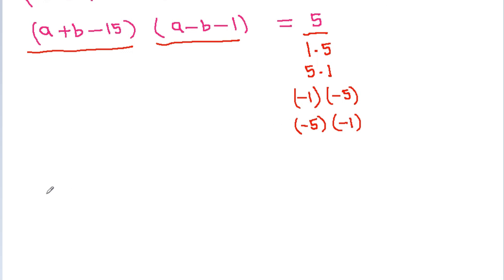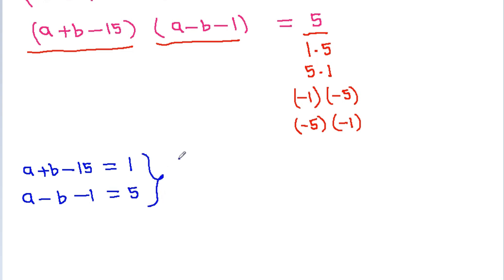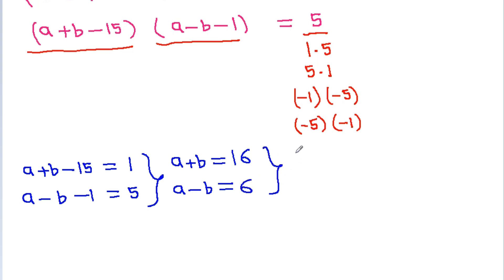Case 1: If (a+b-15) = 1 and (a-b-1) = 5, then a+b = 16 and a-b = 6. Solving, a = 11 and b = 5.